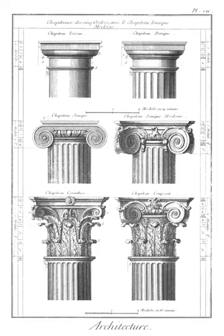Truss: a structural component made of straight wood or metal members, usually in a triangular pattern, with pinned connections at the top and bottom cords, and which is used to support structural loads as those on a floor, roof, or bridge.